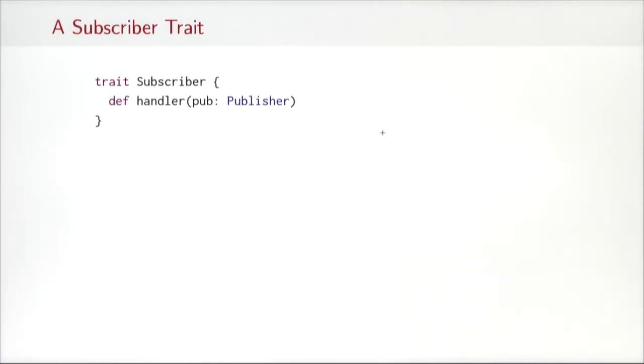So let's see the subscriber next. Subscribers are very simple. All they need to have is this handler method and we pass the publisher that published new information as a parameter to that handler.